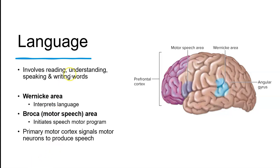Language involves reading, understanding, speaking, and writing words. There are two brain areas important in language. Wernicke's area helps us to interpret what we read or hear and to produce speech that is understandable and not just gibberish. The motor speech area is Broca's area, and that regulates the precise motor activity required for us to produce speech, so the primary motor cortex signals motor neurons to activate the production of speech.